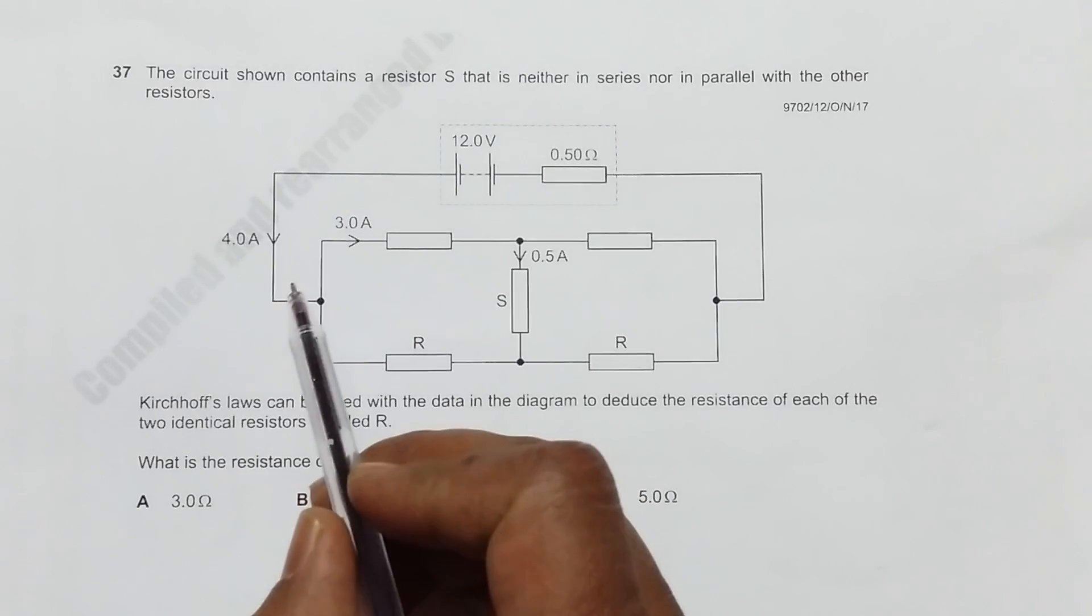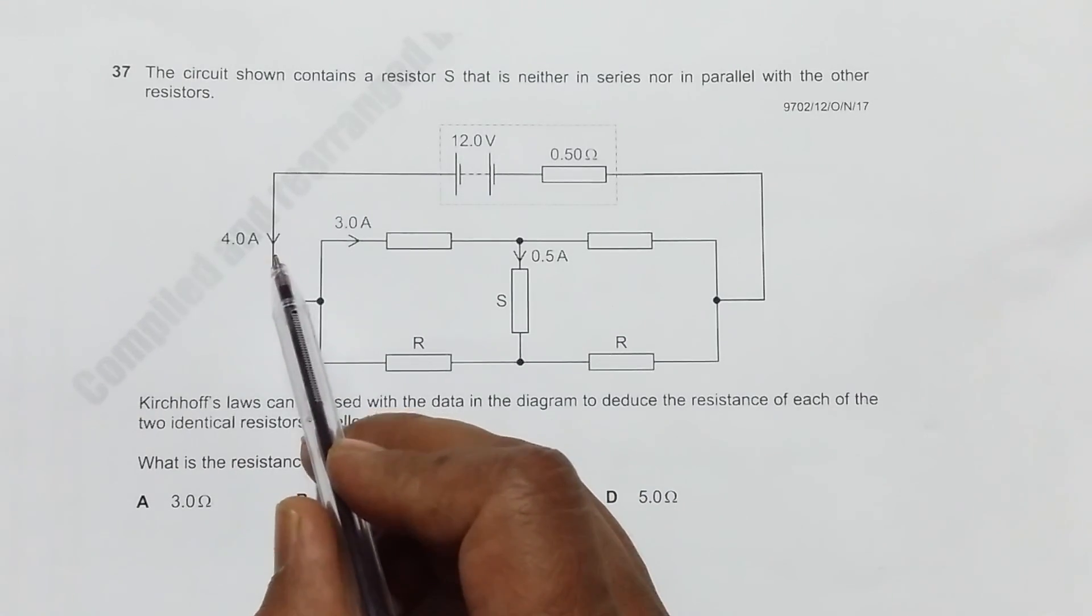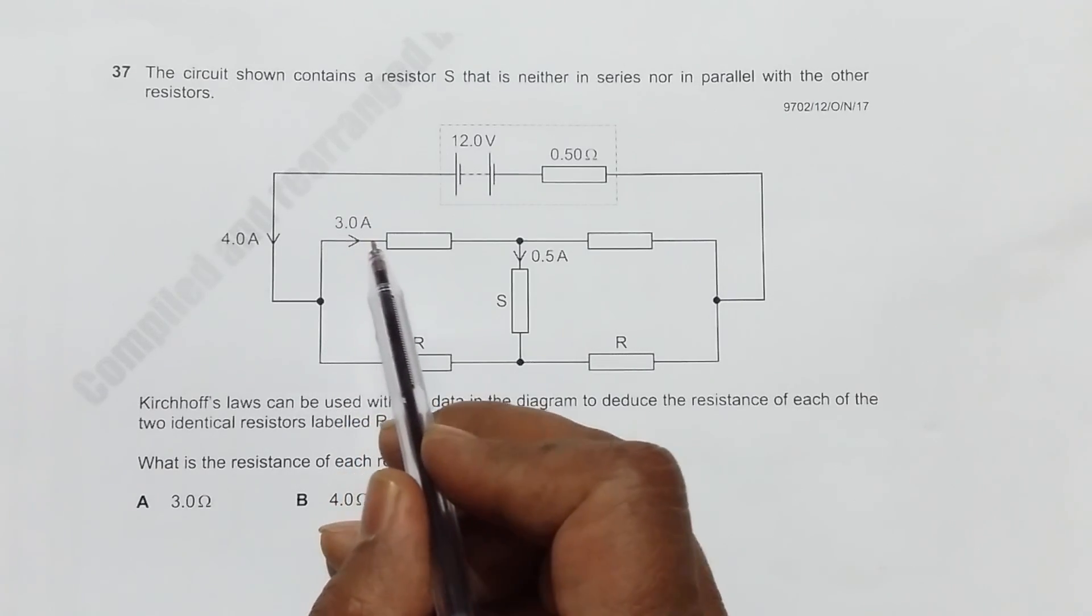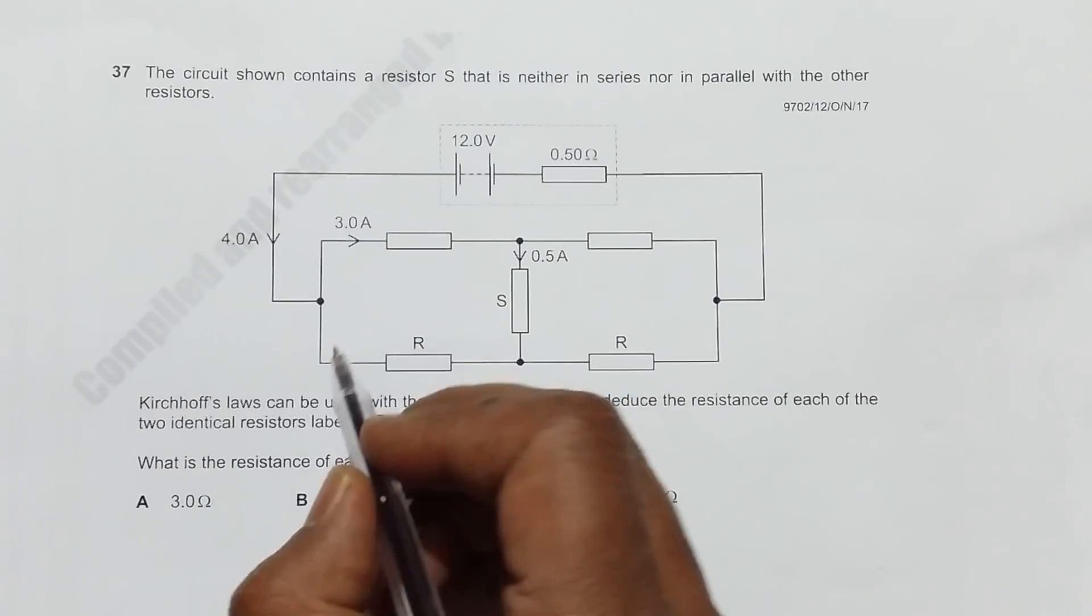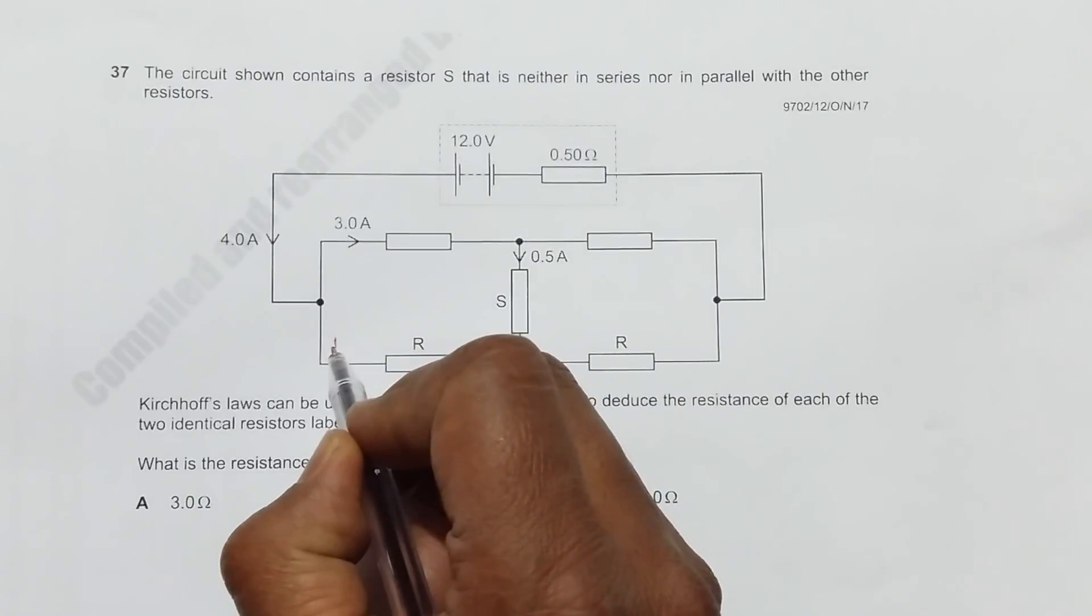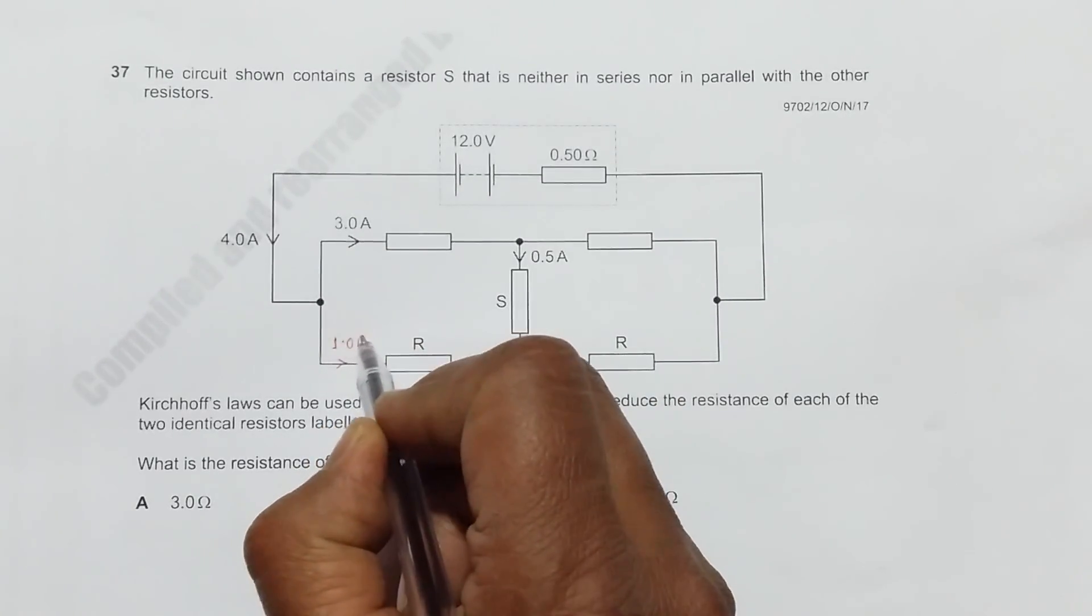As we see here, the current is 4 amperes, out of which 3 amperes goes to this path, so that means the current here should be 1.0 amperes.